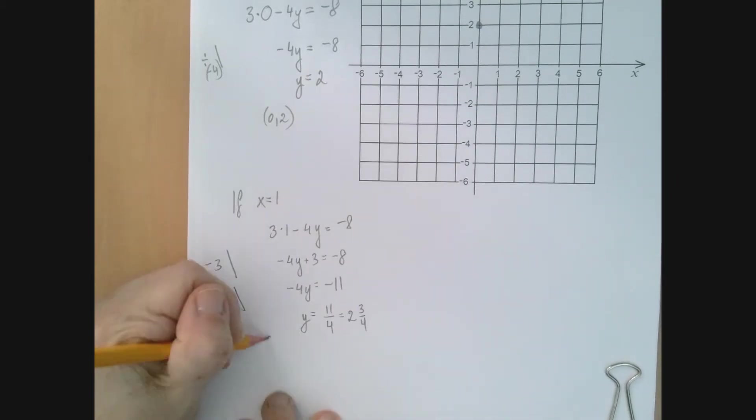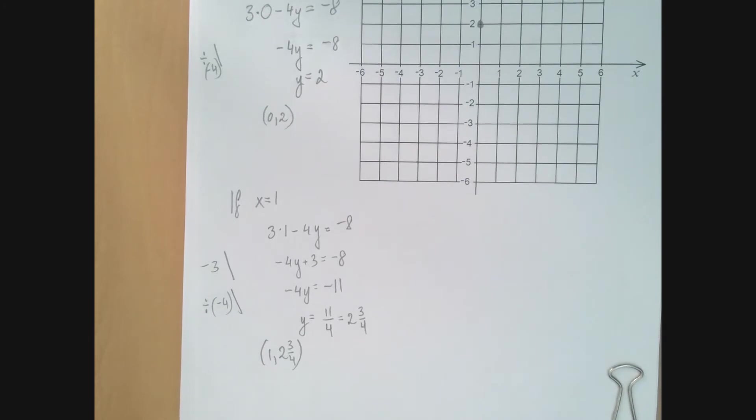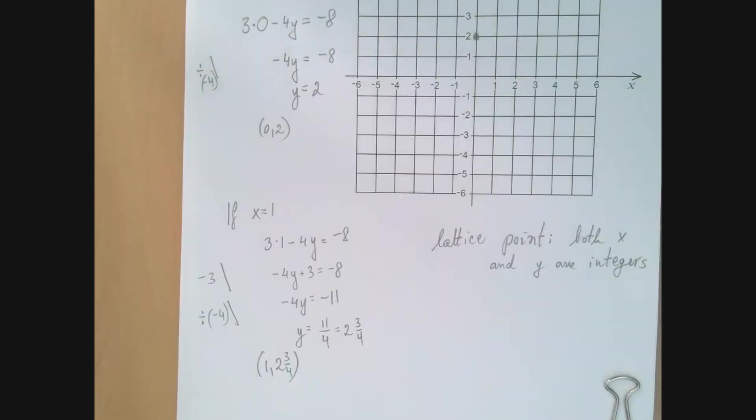So we found the point (1, 2 and 3/4). If we want to graph a line with good precision, we should not use points like this. It is much more preferable to use points where both x and y are integers. Such a point is called a lattice point. If it's possible, we should work with lattice points.